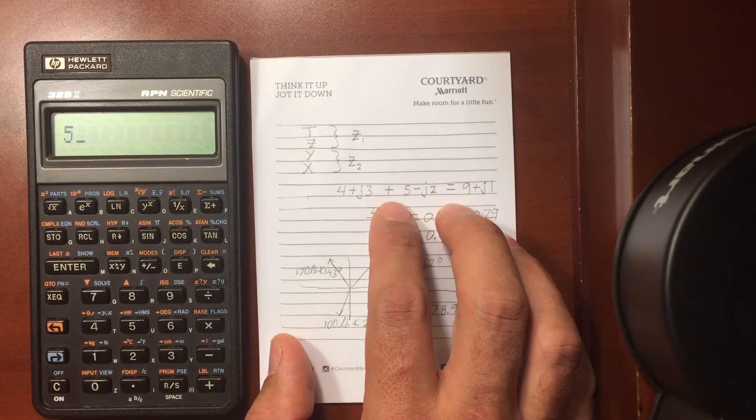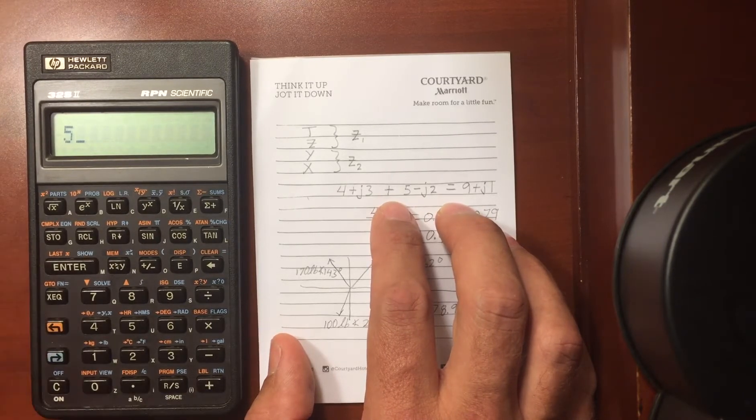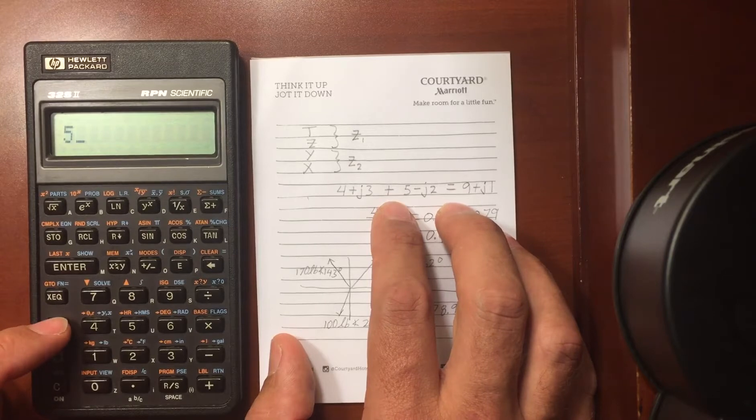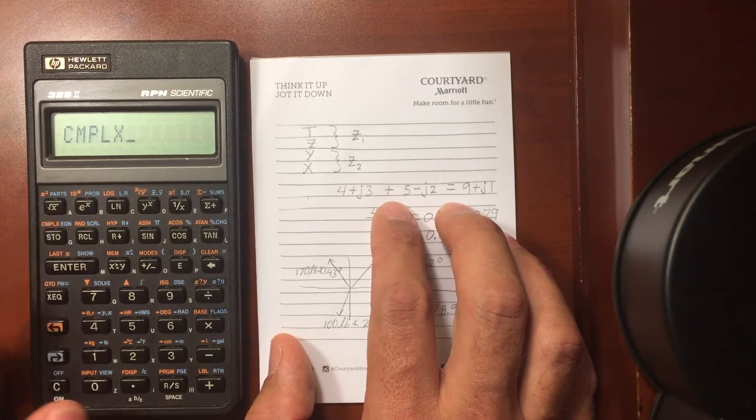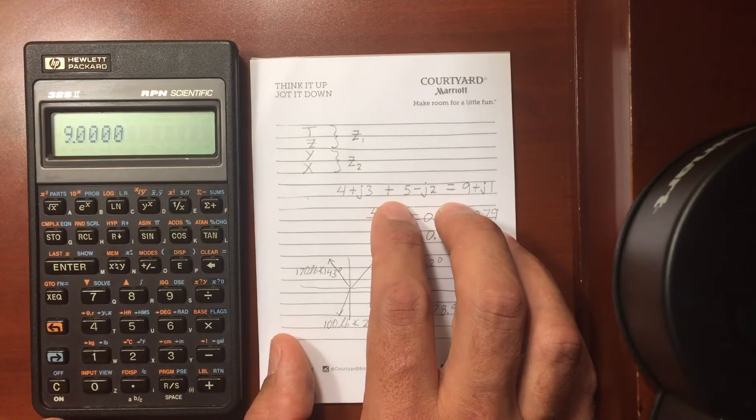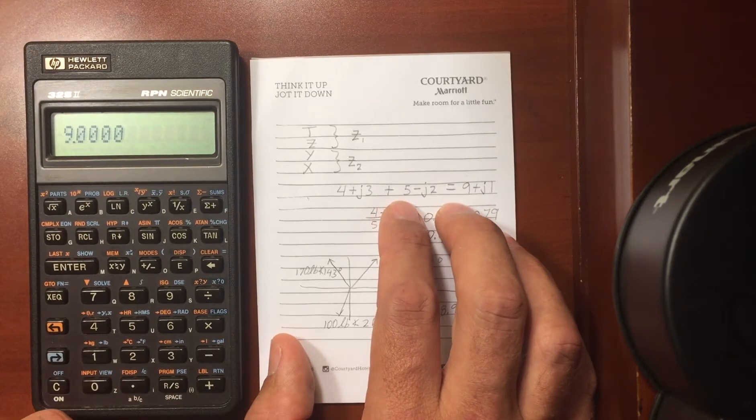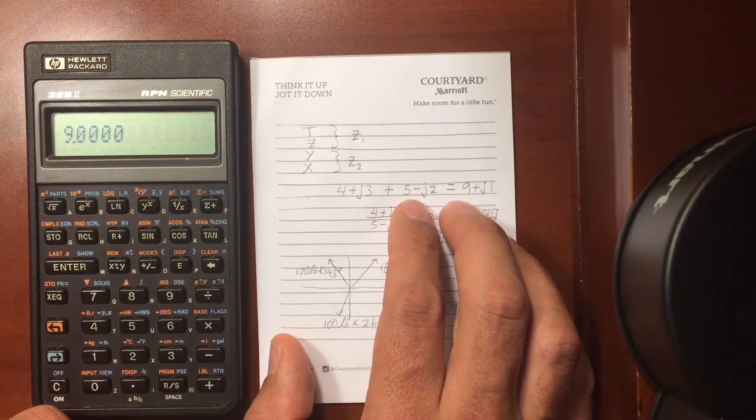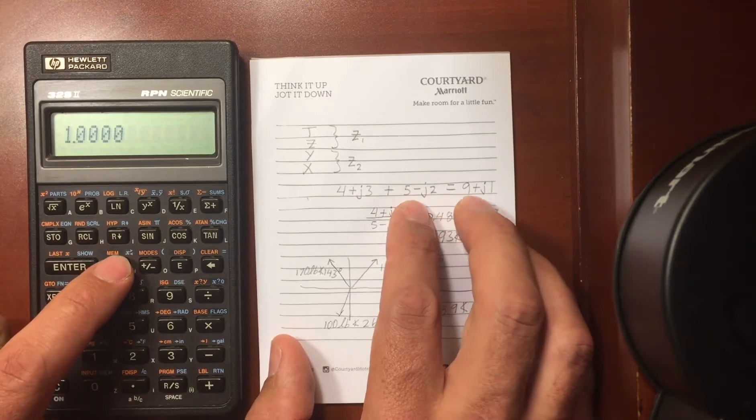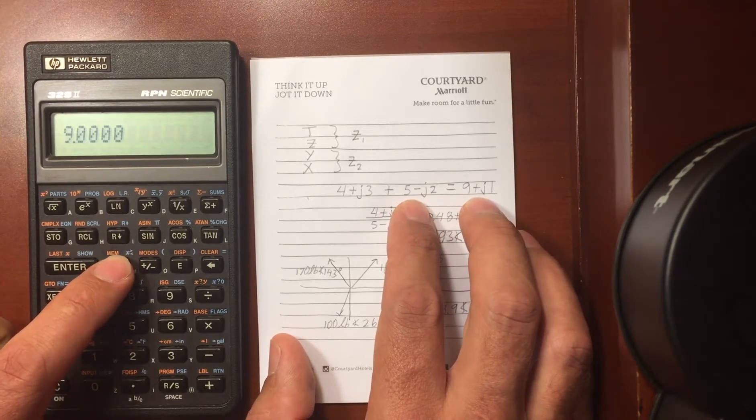If I want to add them in the complex realm, remember they're just numbers in the stack right now, then I have to do shift complex, and then what operation do I want to do? I want to add them, so this gives me the result in the X and Y registers. I have 9 in the real, I swap, and I have 1 in the imaginary, so that's what I was expecting.